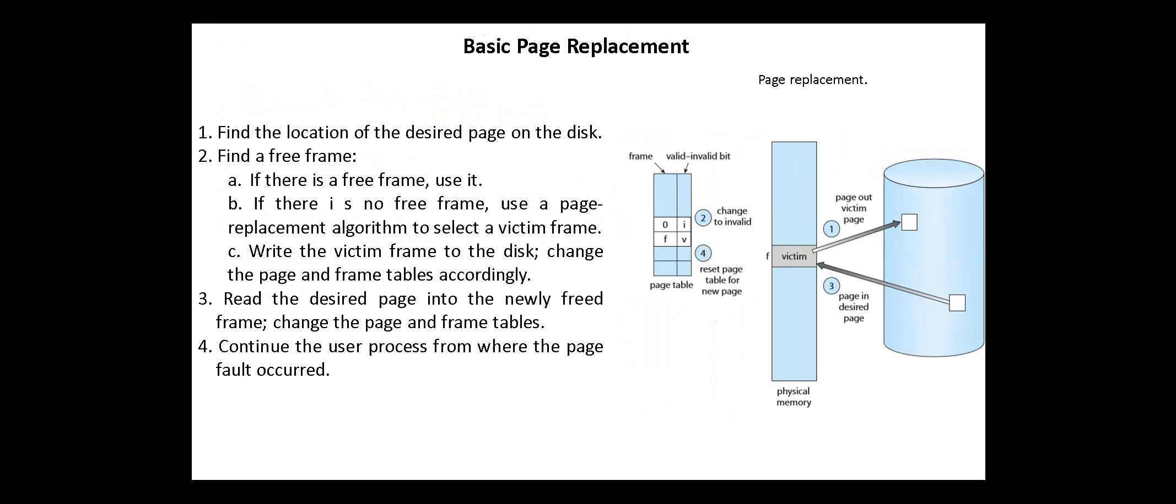So according to demand paging, we find the location of the desired page on the disk. Next, the operating system should find a free frame. If there is a free frame, we swap in the required page into this free frame as we discussed earlier. If there is no free frame, we use a page replacement algorithm.